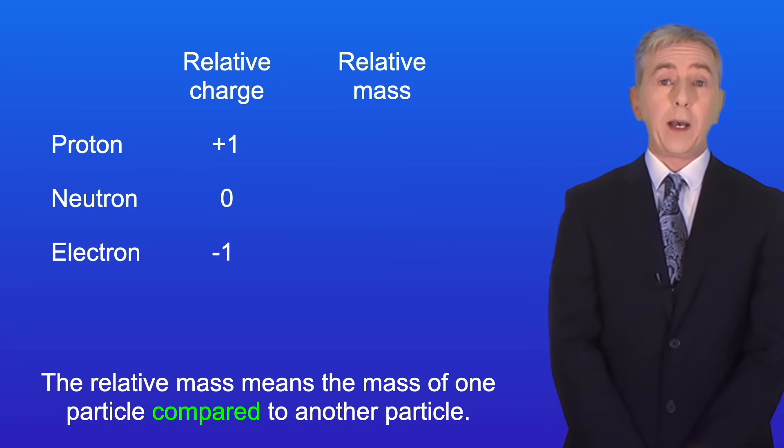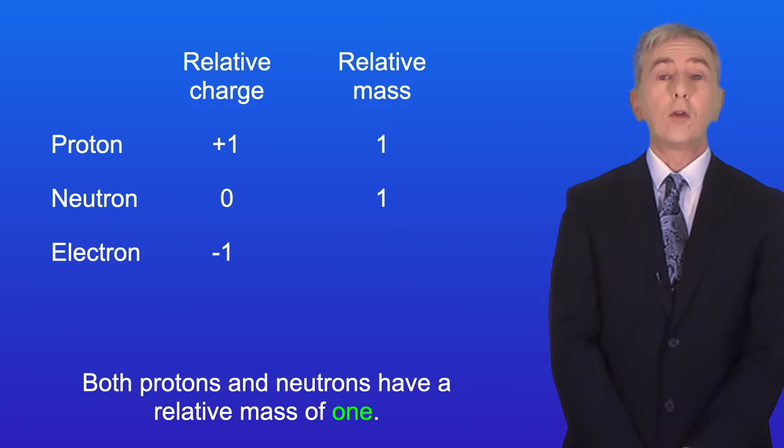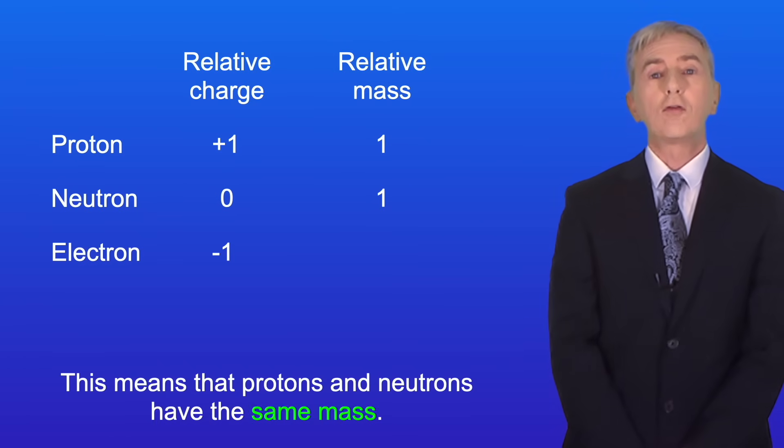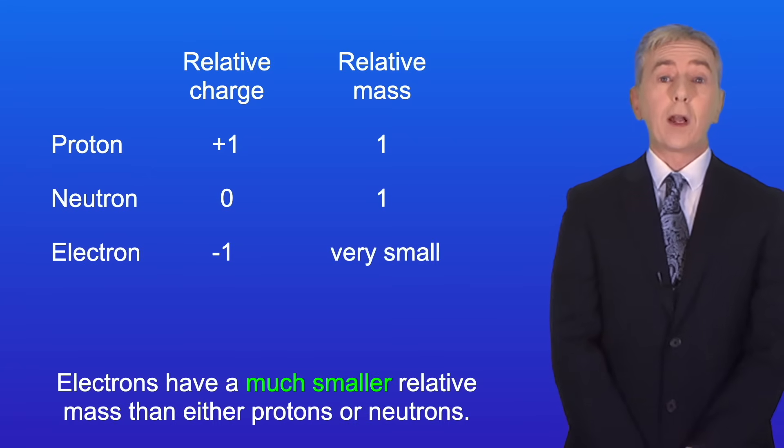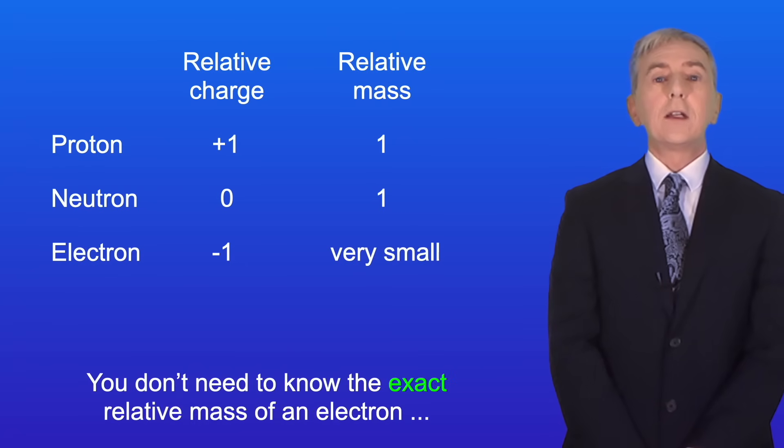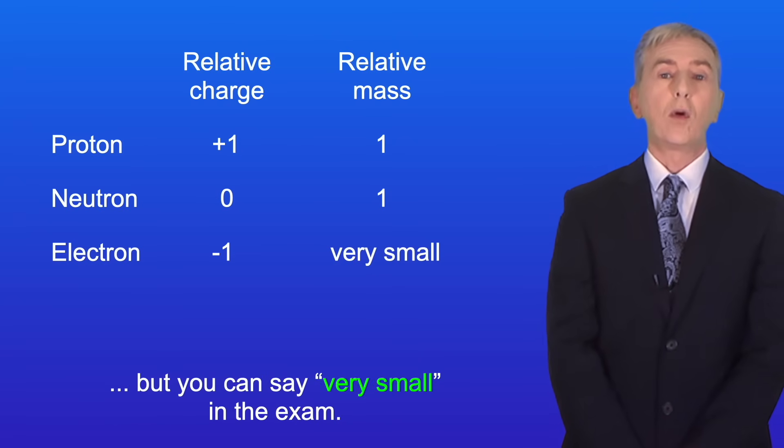Now the relative mass means the mass of one particle compared to another particle. Both protons and neutrons have a relative mass of one. This means that protons and neutrons have the same mass. Electrons have a much smaller relative mass than either protons or neutrons. You don't need to know the exact relative mass of an electron but you can say very small in the exam.